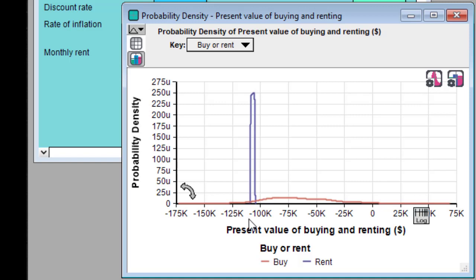Now you can see that the uncertainty for renting has substantially narrowed. It looks like it's between $105,000 and $109,000 now.